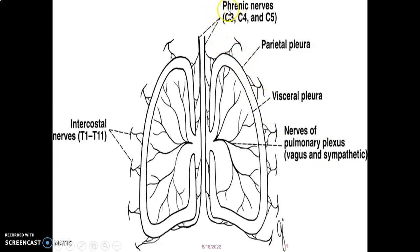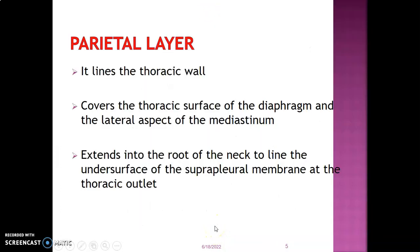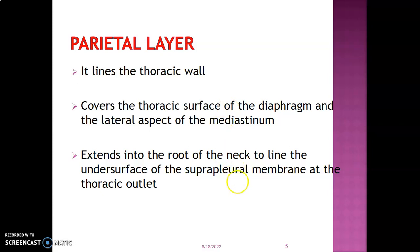The parietal layer has somatic innervation from the phrenic nerve and intercostal nerves. It lines the thoracic wall, covers the thoracic surface of the diaphragm, and covers the lateral aspect of the mediastinum. Superiorly, the parietal layer extends into the root of the neck and lines the supra-pleural membrane at the thoracic outlet.